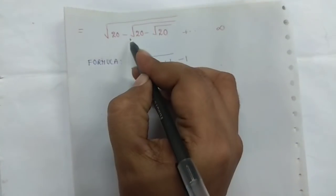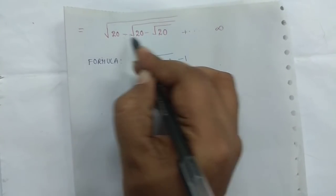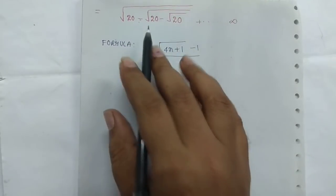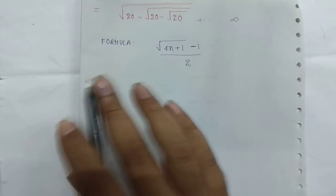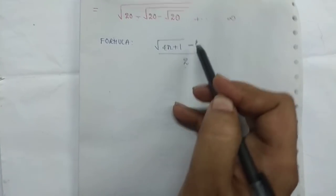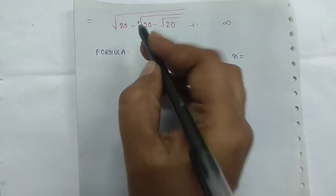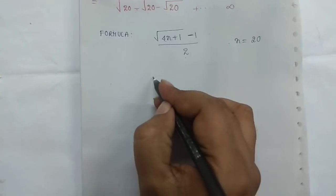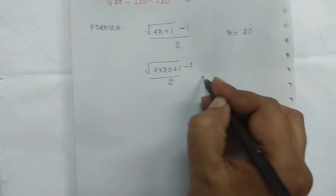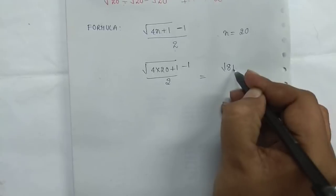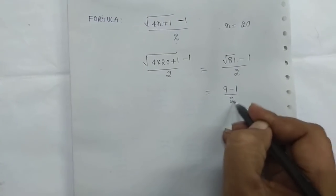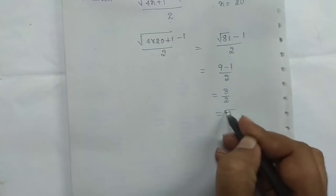Same way, for the minus type — root 6 minus root 6 minus root 6 — we use root of 4n plus 1, minus 1 by 2. So, 4 into 20 is 80, plus 1 is 81, root of 81 is 9, minus 1 by 2 — that means 8 by 2, which equals 4. So the answer is 4.